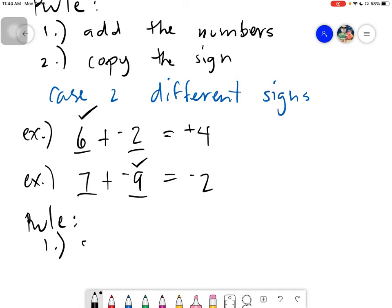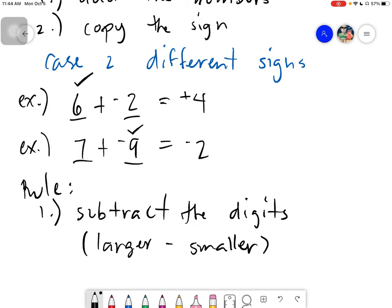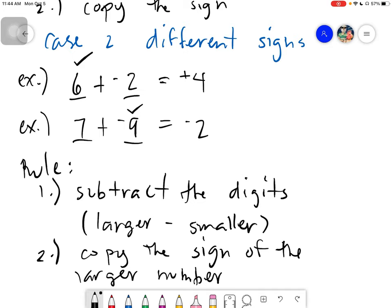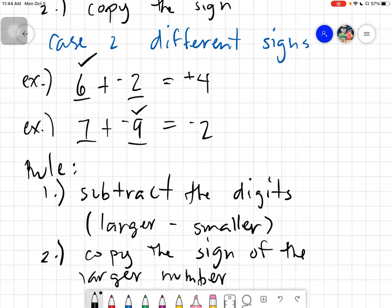So, the rule for this one would be this one. First one is subtract the digits. We have a small side note here that the digits we subtract is larger minus the smaller. And then, the next one would be, we will simply copy the sign of the larger number. So, after you do that, you have your final answer. And that would be your addition of integers.